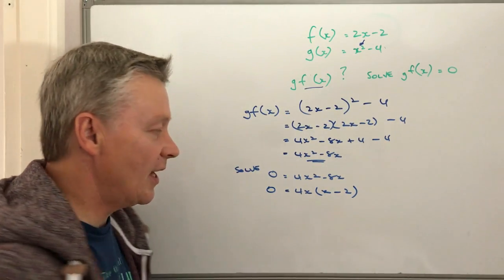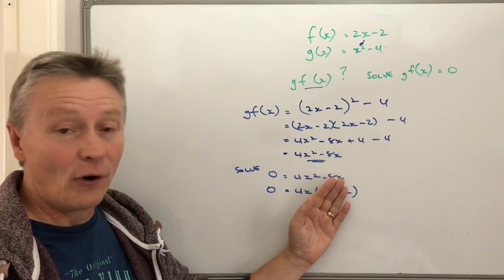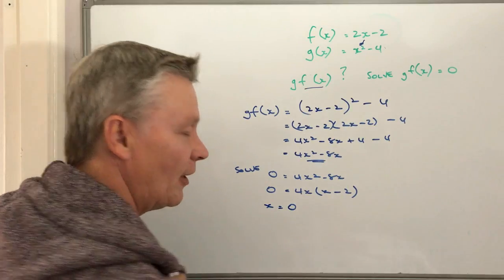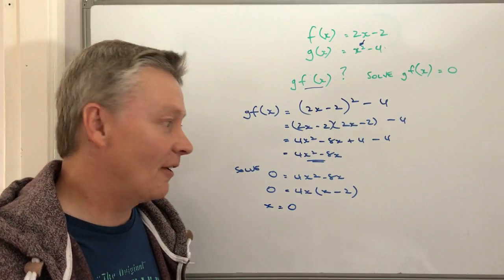Okay, and that equals 0. So if I look at 4x equals 0, it means that x is going to be equal to 0 because 4 lots of 0 is 0.